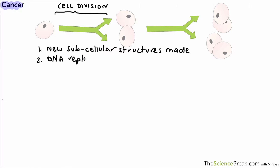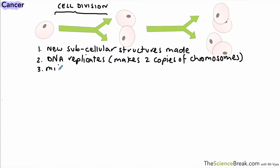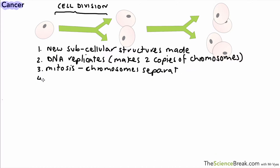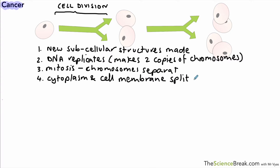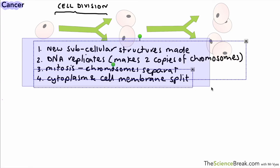In the cell cycle, new subcellular structures are made, like ribosomes and mitochondria. We then have the DNA which replicates itself to make two copies of chromosomes. The chromosomes, during mitosis, line up along the nucleus and get separated to two separate parts of the cell. And then the cytoplasm and cell membrane split off to make two new cells. You can see a little summary of that in the diagram above.